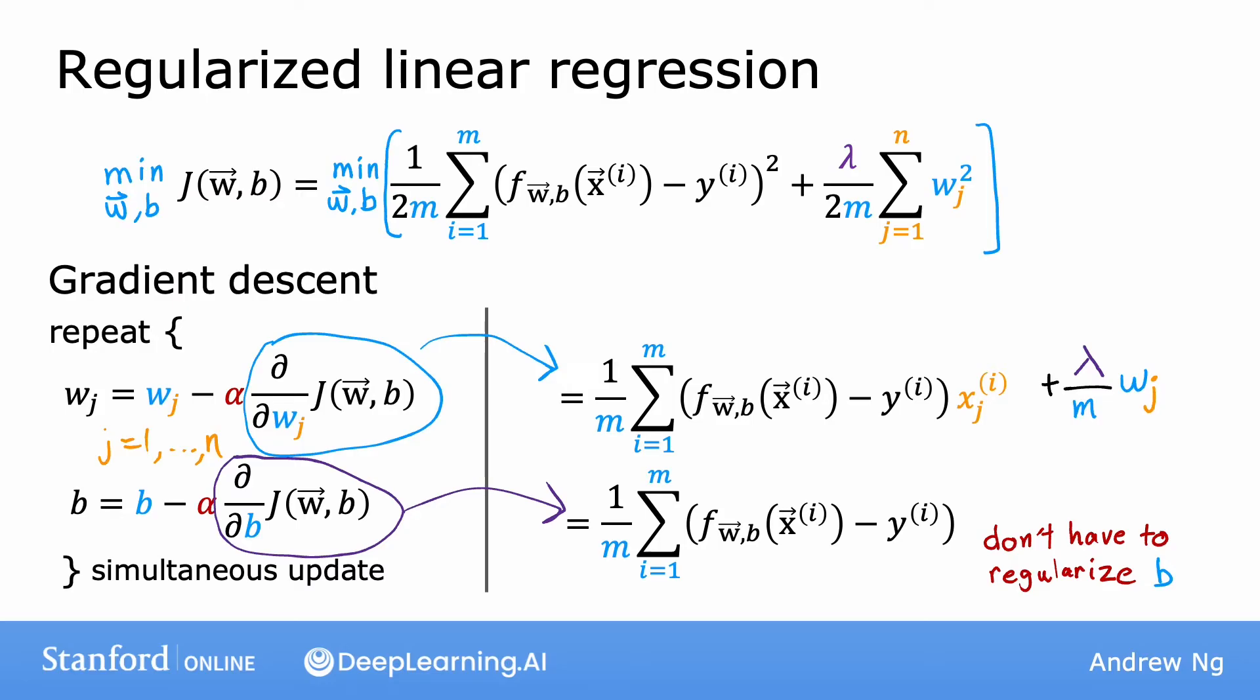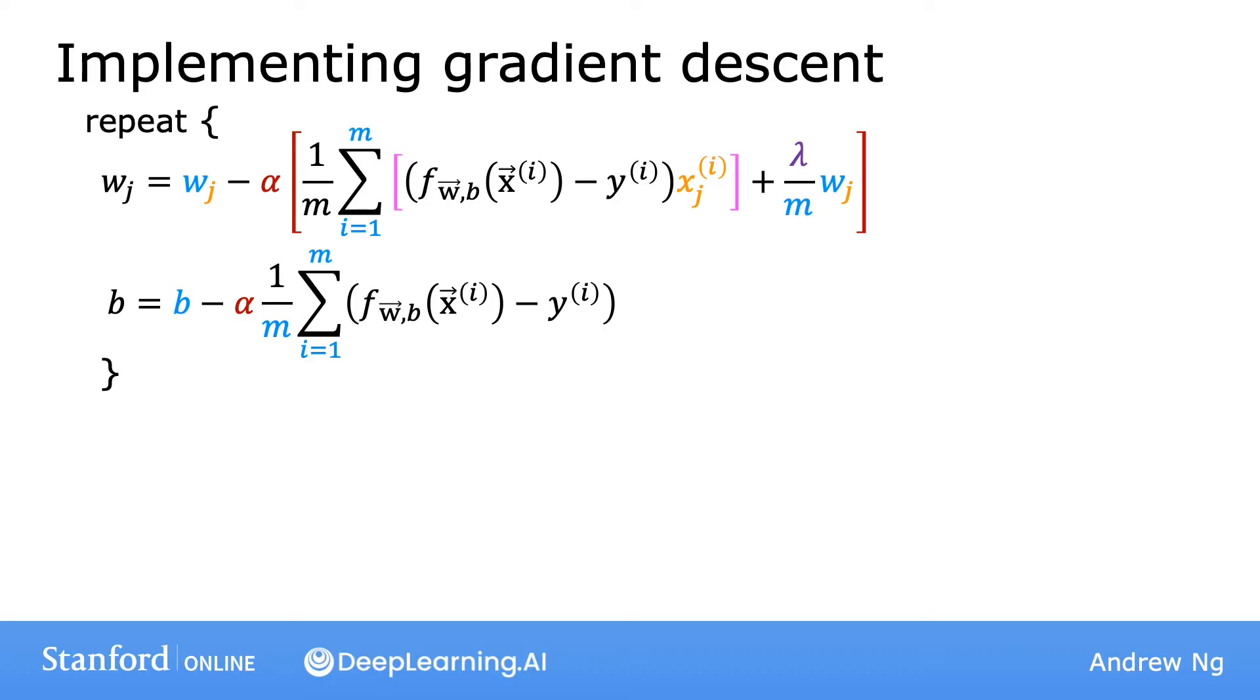So let's take these definitions for the derivatives and put them back into the expression on the left to write out the gradient descent algorithm for regularized linear regression. So to implement gradient descent for regularized linear regression, this is what you would have your code do. Here's the update for w_j, for j equals one through n, and here's the update for b. And as usual, please remember to carry out simultaneous updates for all of these parameters.